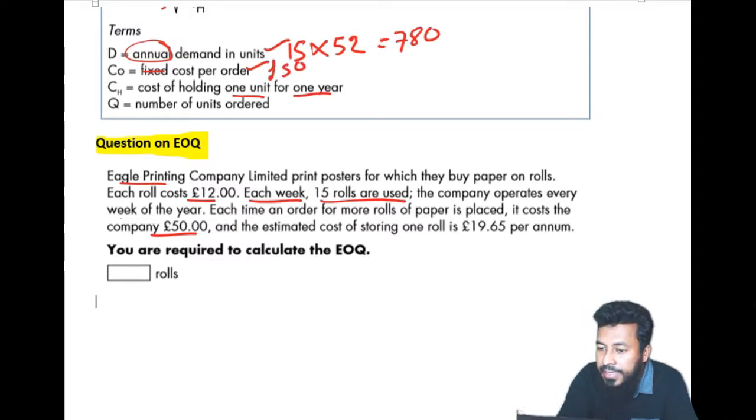Let's keep going. And the estimated cost of storing, storing means holding. One roll is 19.65 per annum. So it is your CH. Cost of holding one item or one unit for one year is 19.65.